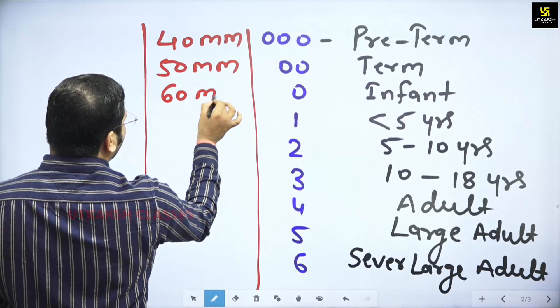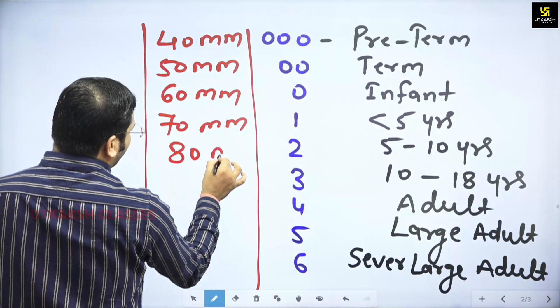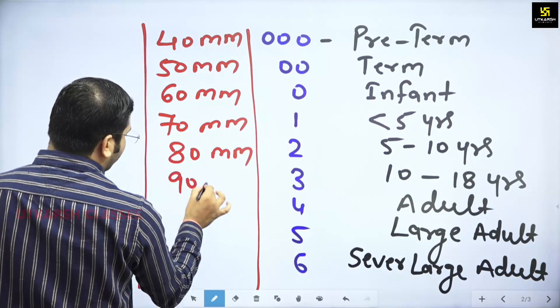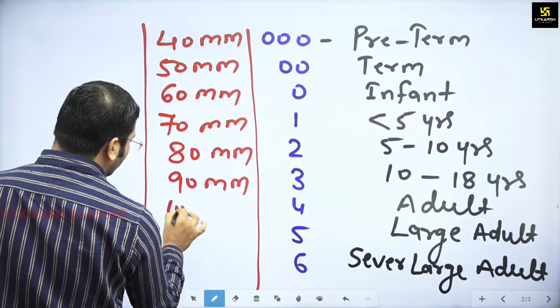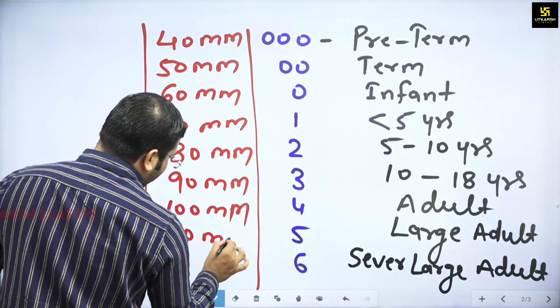This is 60 mm, this is 70 mm. Next is 80 mm, 90 mm, 100 mm, 110 mm. Last is size 6, which is 120 mm.